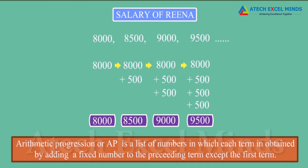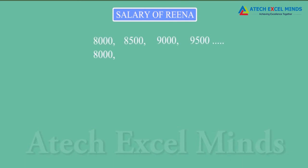Each term in this list is called a term. The difference between two successive terms is known as common difference. Here, the common difference is 500.